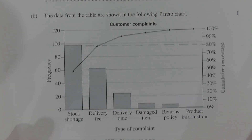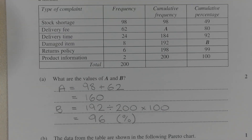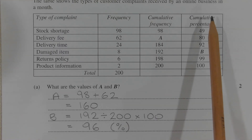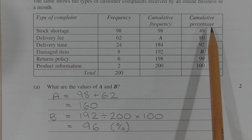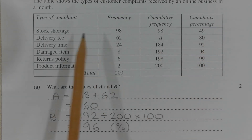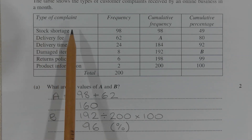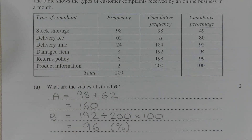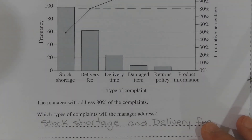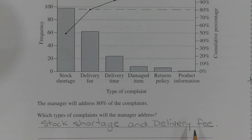The other way of answering this question is to refer to the table, and in particular the cumulative percentage column. We can see that 80% of the complaints involve delivery fee or stock shortage. So either way, the manager will address stock shortage and delivery fee, which represent 80% of the complaints.